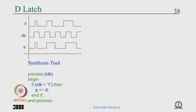Now let us look at the D latch. Earlier we wrote a flip-flop code for the simulator and it happened to be a latch for the synthesis tool. The D latch behaviour is: if clock is '1' then whatever is at D will appear on Q; when the clock goes low it remembers. For the synthesis tool: process(clock) begin if clock = '1' then q <= d; end if; end process. The synthesis tool sees this and infers a latch correctly.